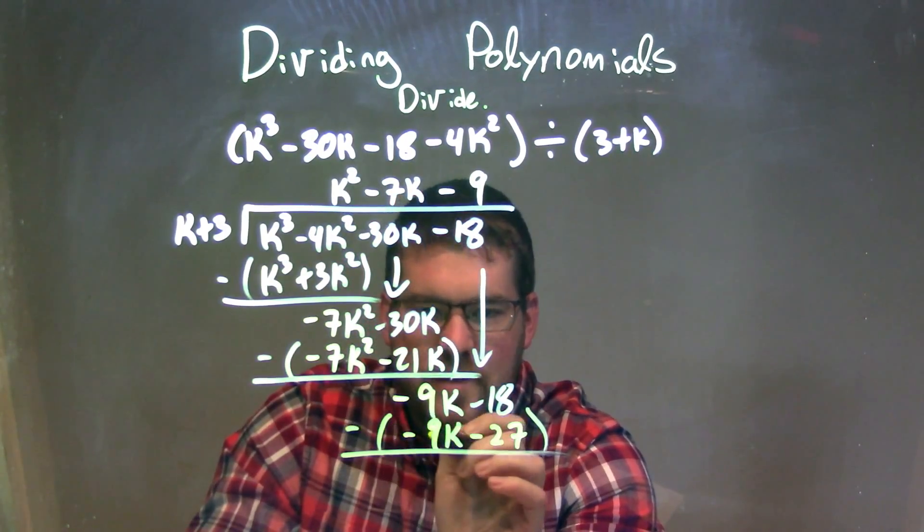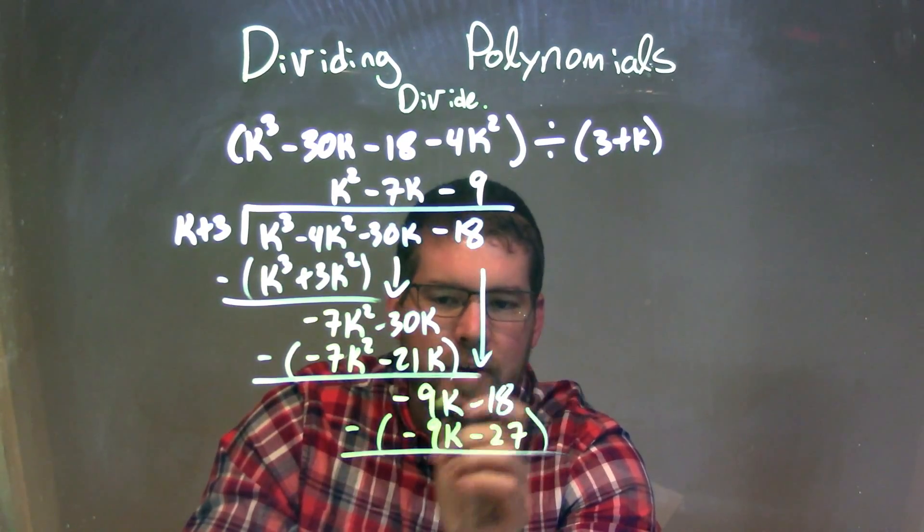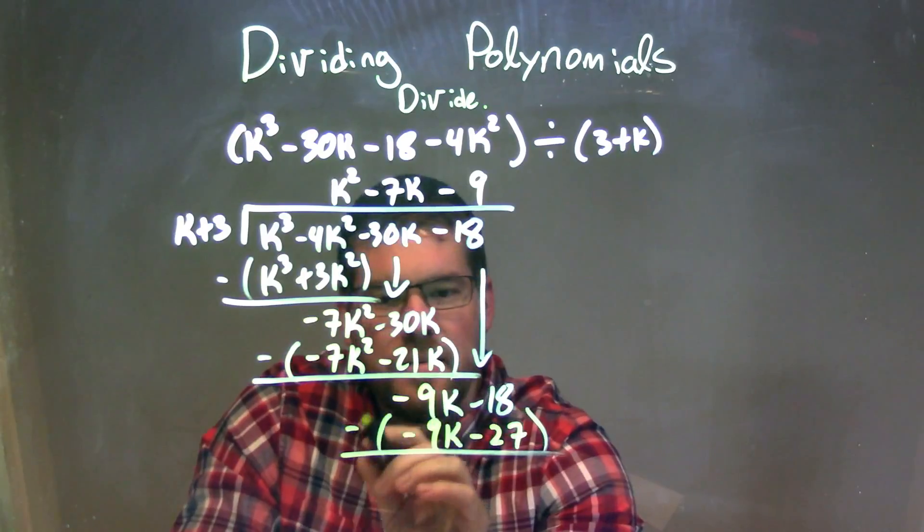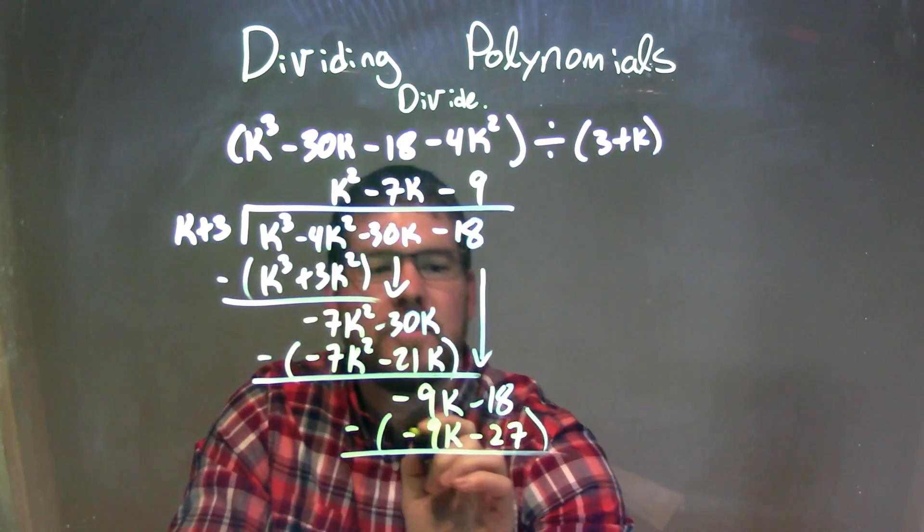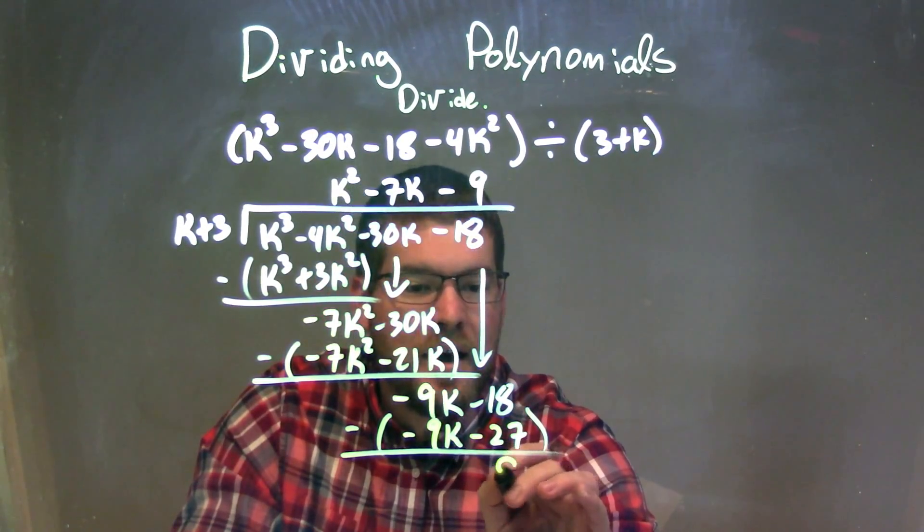Top and bottom. Minus 9k minus a negative 9k is just 0. Cancels out. And minus 18 minus a negative 27 is like adding a positive 27, is just a positive 9.